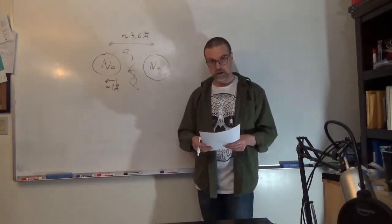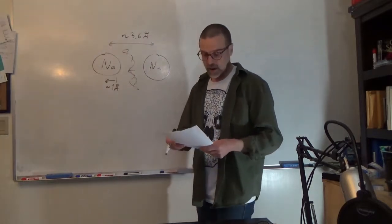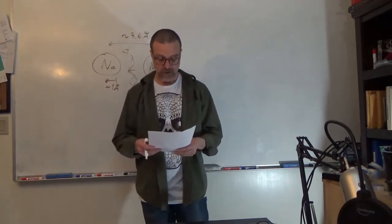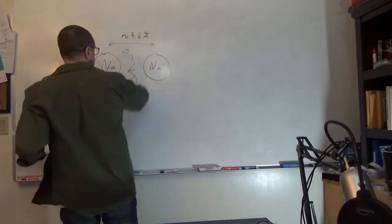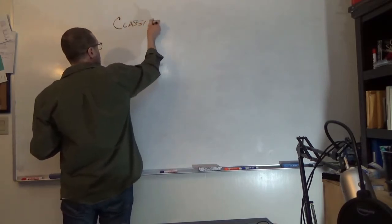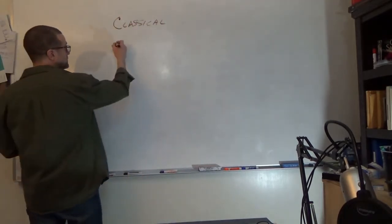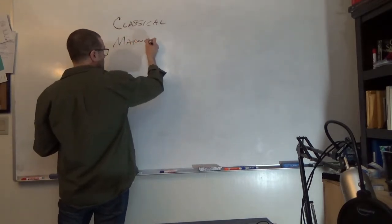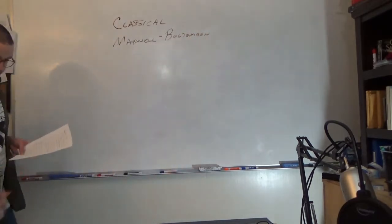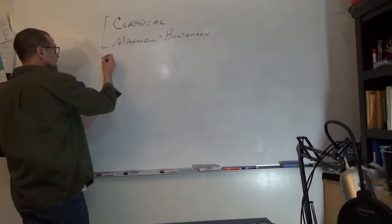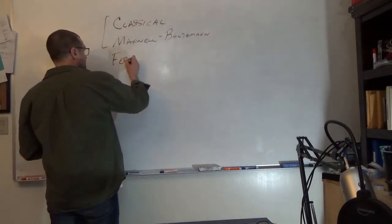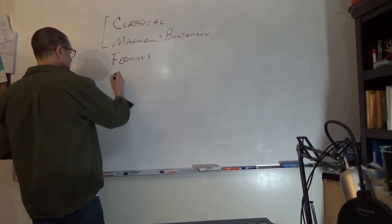Early on, people tried to model a free electron gas and it didn't work out very well. The reason was their choice of statistical mechanical distributions. For classical particles we would use a Maxwell-Boltzmann distribution, whereas for a quantum collection of fermions we use Fermi-Dirac statistics.